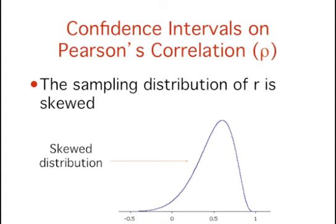Unfortunately, this calculation is a bit complicated because the sampling distribution of R is skewed rather than being normally distributed.